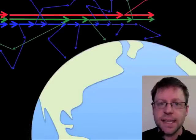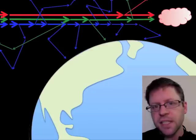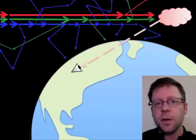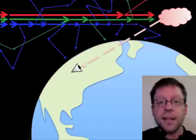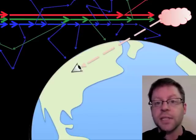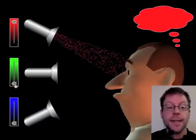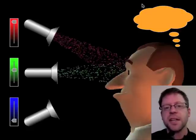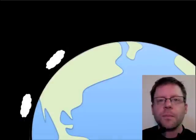What about the reds you might see in the sky? Put a cloud off to the side — what's hitting that cloud? Mostly red and green light, because the blue has all been scattered away. Looking in one direction you see blue sky, but looking toward the cloud, it's being illuminated by red and green light — almost like a red and green spotlight on it. Some of that light reflects into your eyeball, and you'll see reds.